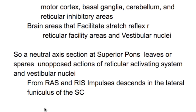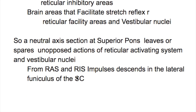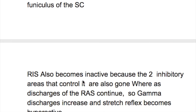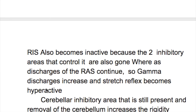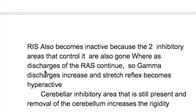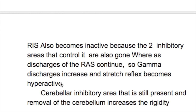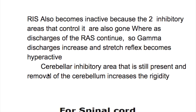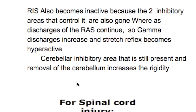Impulses from the reticular activating system and reticular inhibitory system descend in the lateral funiculi of the spinal cord. The reticular inhibitory system also becomes inactive because the two inhibitory areas that control it are gone, whereas discharges of the reticular activating system continue. As a result, gamma discharges increase and the stretch reflex becomes hyperactive.